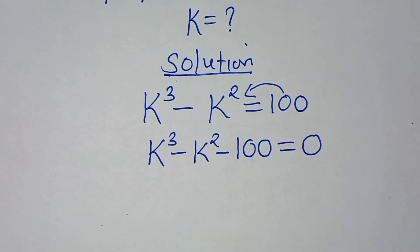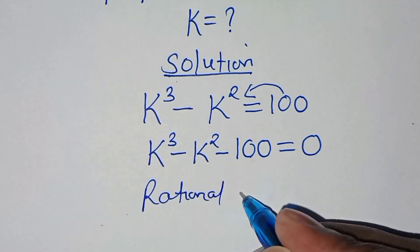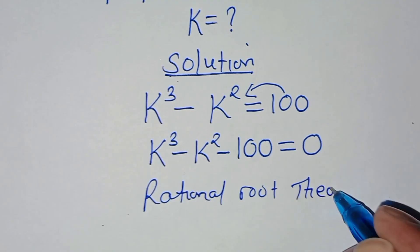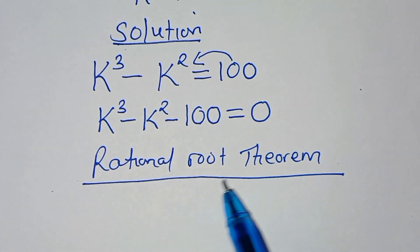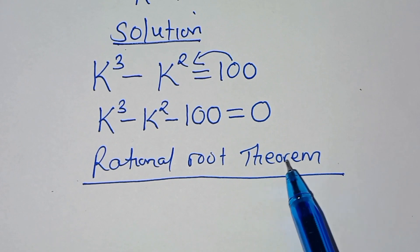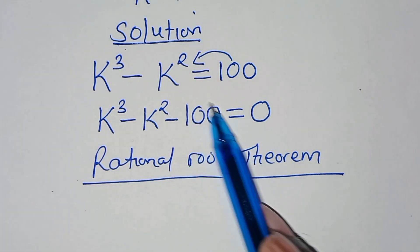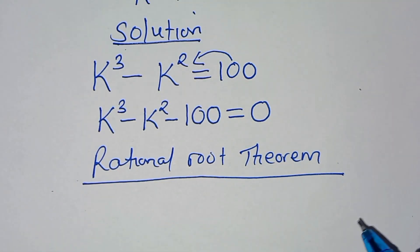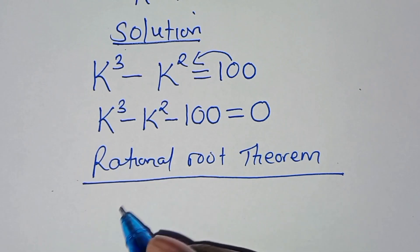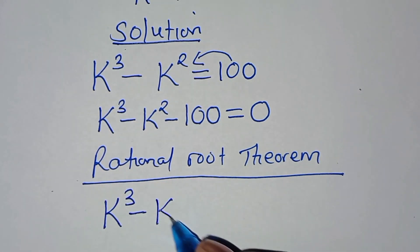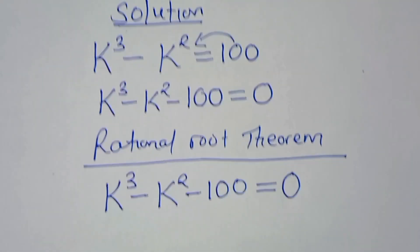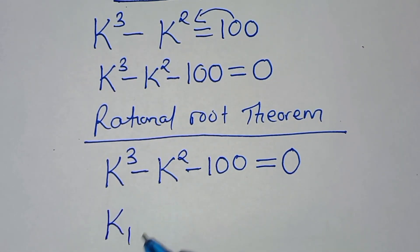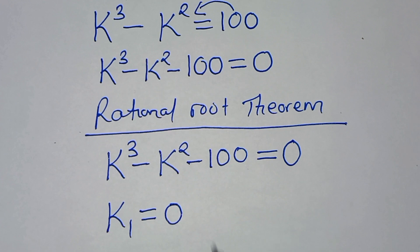To solve this problem we are going to use the Rational Root Theorem, whereby we identify integers that satisfy this cubic function among the set of constant terms. So we have the cubic function k³ minus k² minus 100 equals 0.